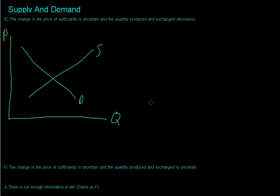All right, so what would happen to cause the change in the price of surfboards to be uncertain, so P to be a question mark, and the quantity produced and exchanged to decrease?